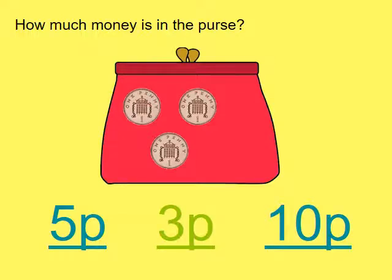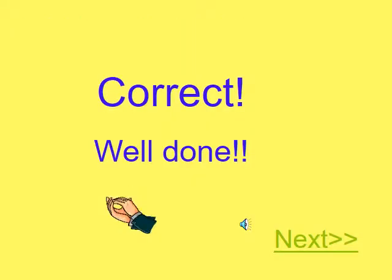Take a look at the purse on the screen. Can you see there are three coins in the purse and they've all got one pence on them? There are three one pence coins. How much is that all together? That's correct, it's three pence.